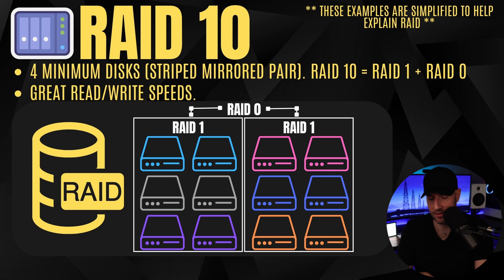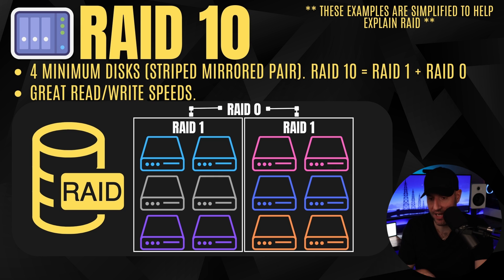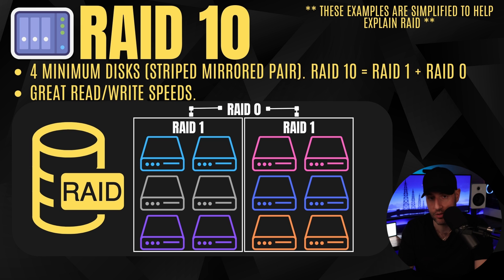RAID 10 requires at least four drives and is a striped mirrored pair — essentially RAID 1 plus RAID 0. You get the best of both worlds: great read and write speeds from the RAID 0 stripe, and your data is mirrored for redundancy. However, RAID 10 is often viewed as the best from a redundancy perspective, but in practice RAID 6 is actually a little better. If you lose any two drives in the same mirrored pair in RAID 10, you lose the entire storage pool.